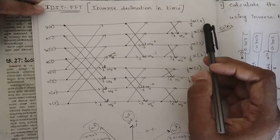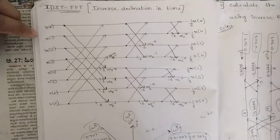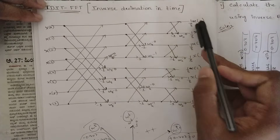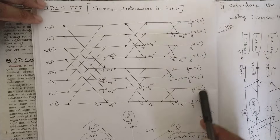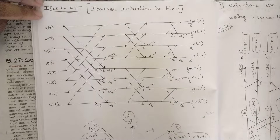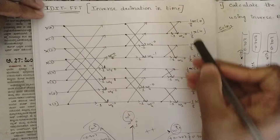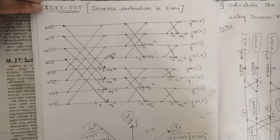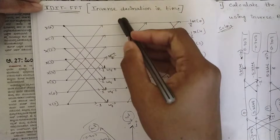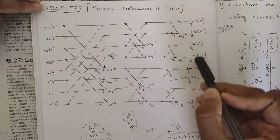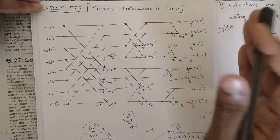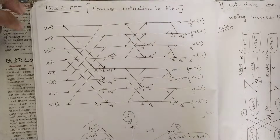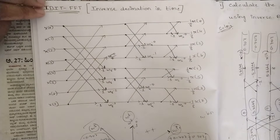Bit reversal takes place on the output side. As explained in the last session, according to bit reversal, write the outputs X of zero, one, two, three, four, five, six, seven. One simple change is on the output side: we should divide by N — that is, however long the sequence is, we divide by that length. For an eight-point IDFT, divide by eight for all terms. After division by eight, the answers obtained are the final IDFT sequence.